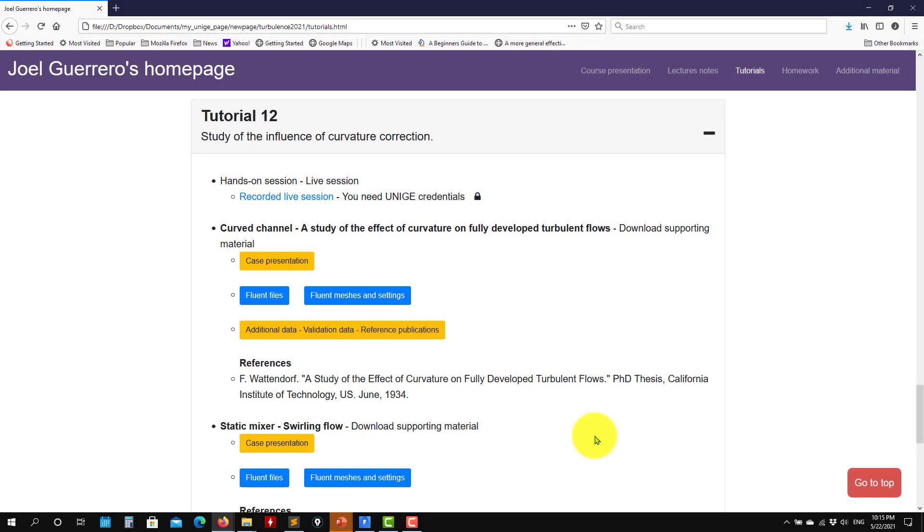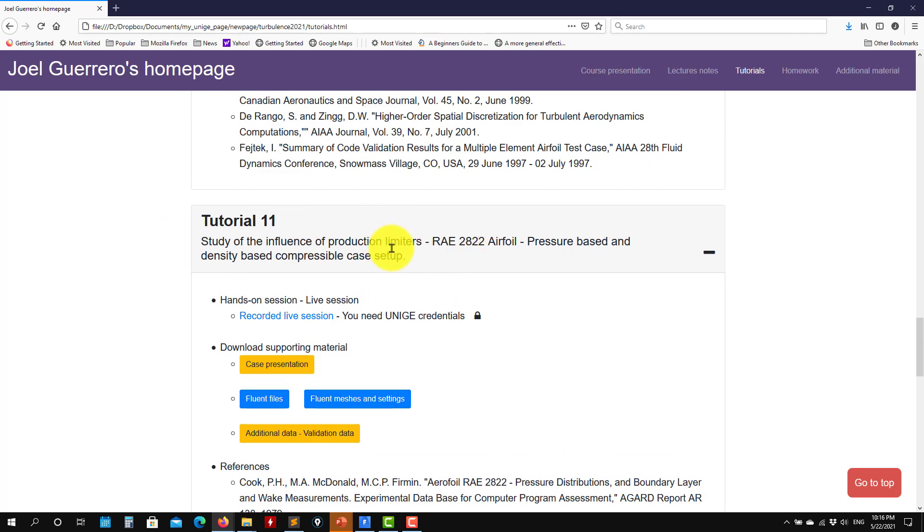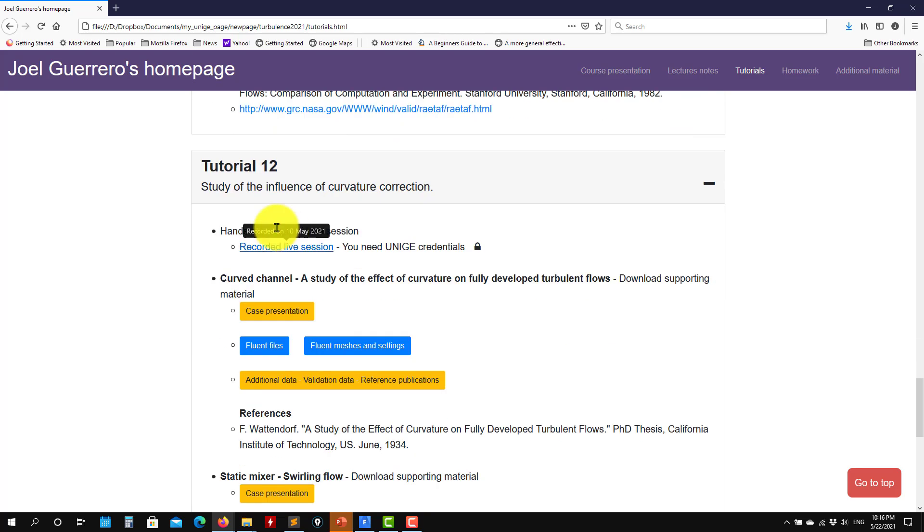Hello and welcome to tutorial 12. In this tutorial we're moving now to the next type of correction. It will be curvature correction. In the previous one we addressed the production limiter. So this is the other important one. Remember that there are many of these models, the viscosity models, that they have many deficiencies or limitations that can be overcome by adding a small modification, but these two are the most important ones.